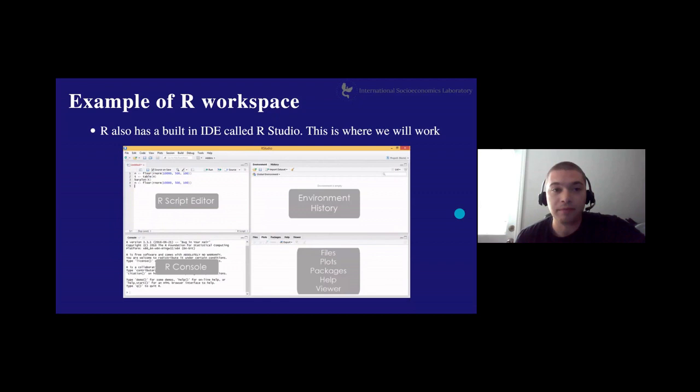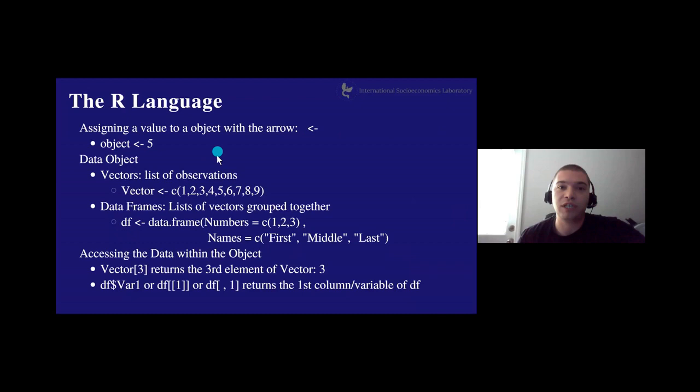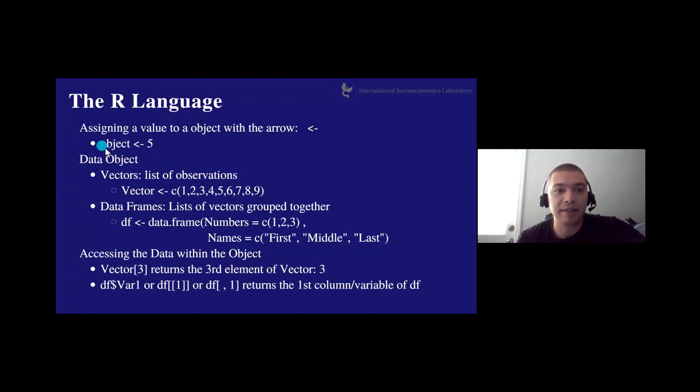Let's talk about the R language. In most languages, if you assign a variable, you use an equal sign — like x equals five in algebra. But in R we don't want to say x equals five; we want to assign the value five to x. So we use this arrow to assign a value to an object. This means five is being assigned to an object named 'object.' This is called a scalar — it only has one value.